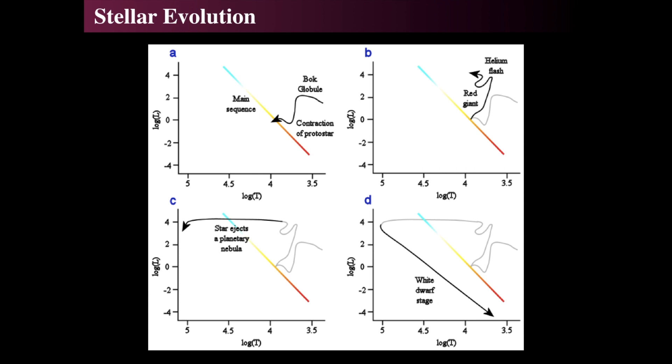So if we start with A, B, C, D, we find that they become what are called Bok globules. They contract to form protostars, then they become main sequence stars. When they die and leave the main sequence, a star like the Sun will grow to be a red giant, experience a helium flash, become unstable, eject its outer layers to become a planetary nebula, and eventually the core of the star cools off as a white dwarf. And this is what we call an evolutionary track.